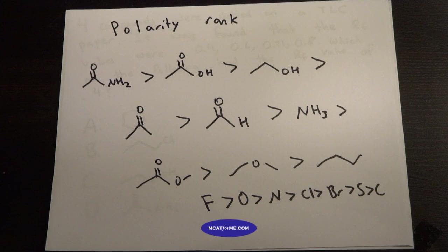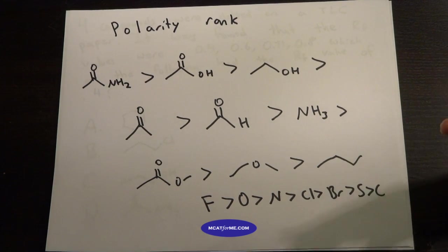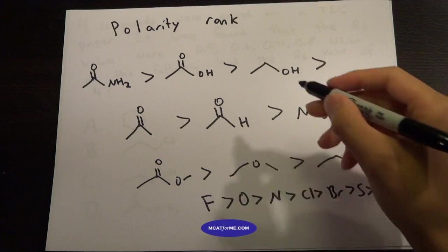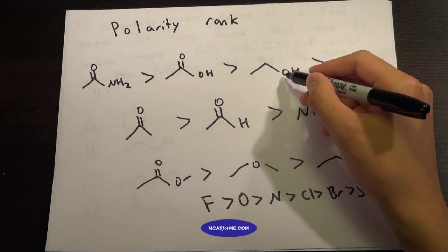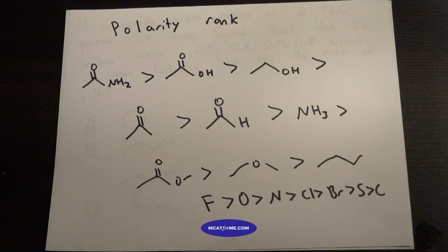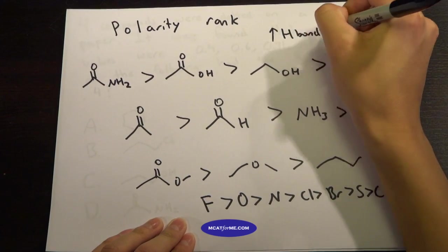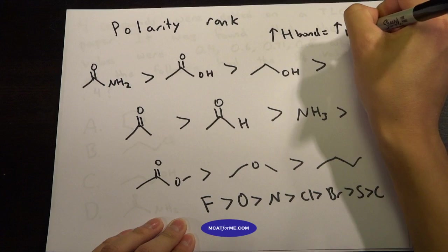So pretty much electronegativity or polarity has a difference in electronegativity. So this O is very different in electronegativity to the C and also the H. So that's why it would be very electronegative. Also, hydrogen bonding really contributes to polarity. Something that has more hydrogen bonding equals more polar.